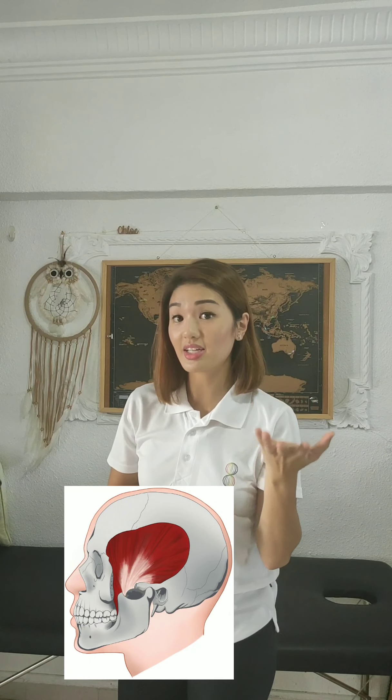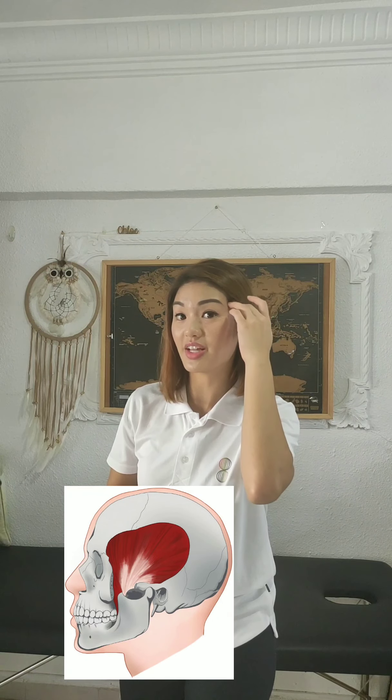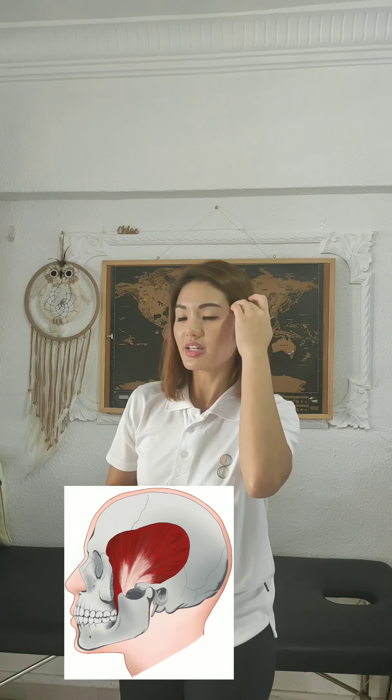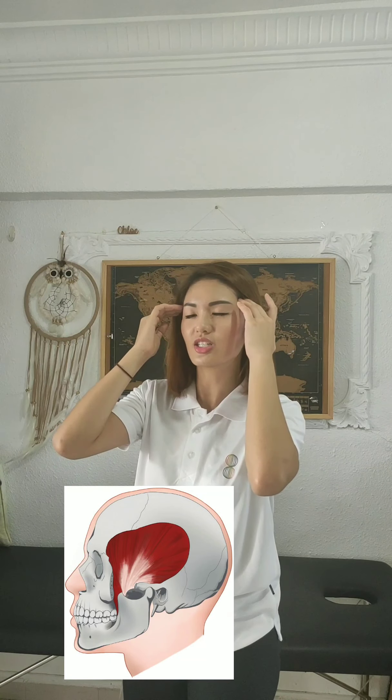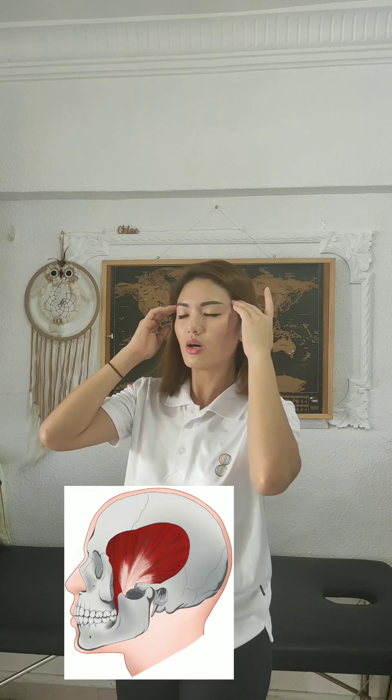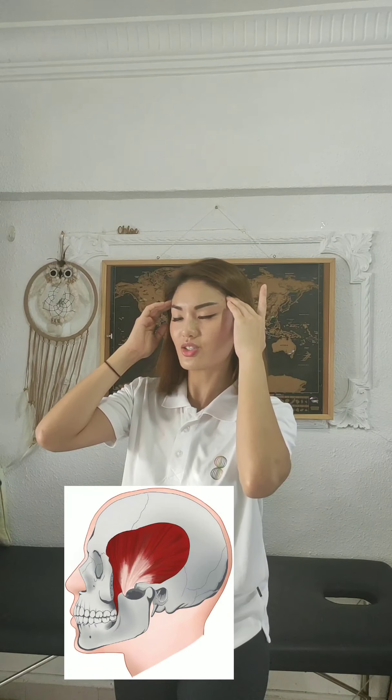The next muscle is the temporalis muscle. To locate it, clench your teeth again and you can feel tension, tightening, and hardening of that area. Find that spot — you can do this on both sides as well, which is quite relaxing. Allow a pull upward like a stretch, breathe and relax. I really like this stretch because it's really comfortable and relaxing.